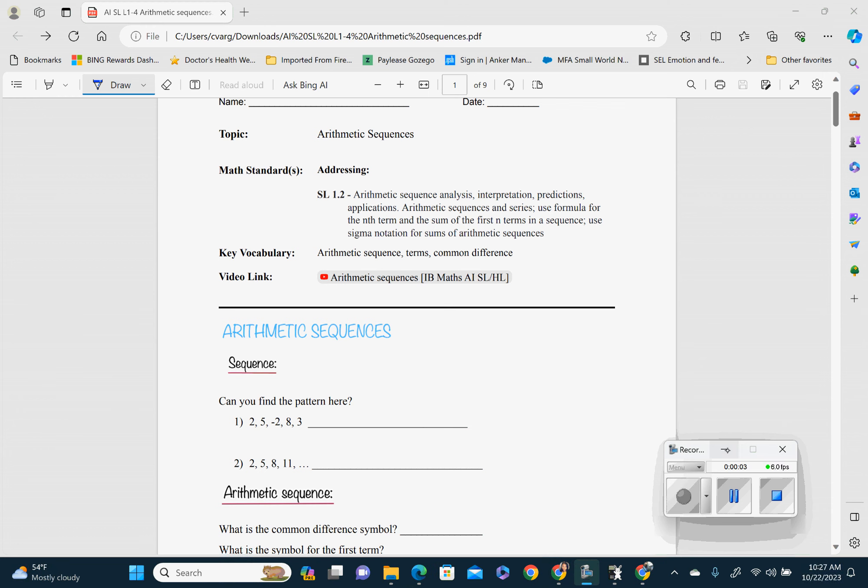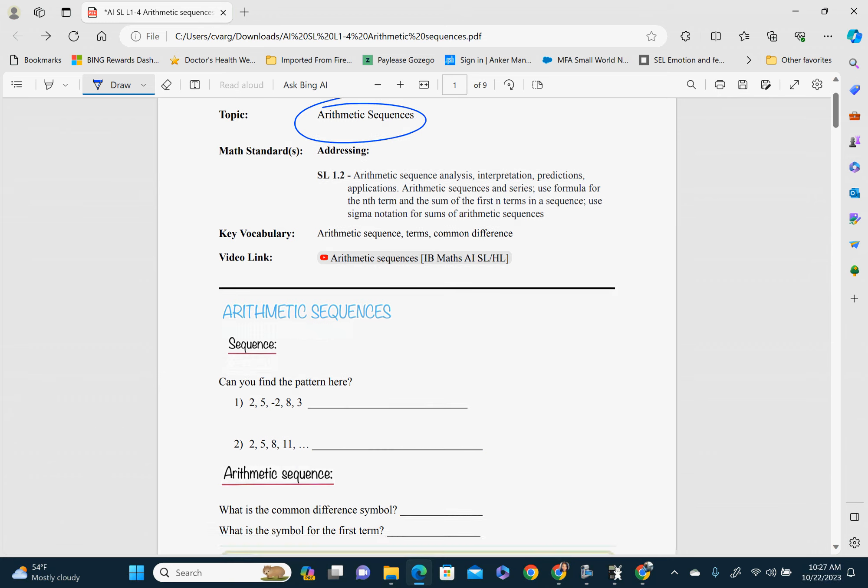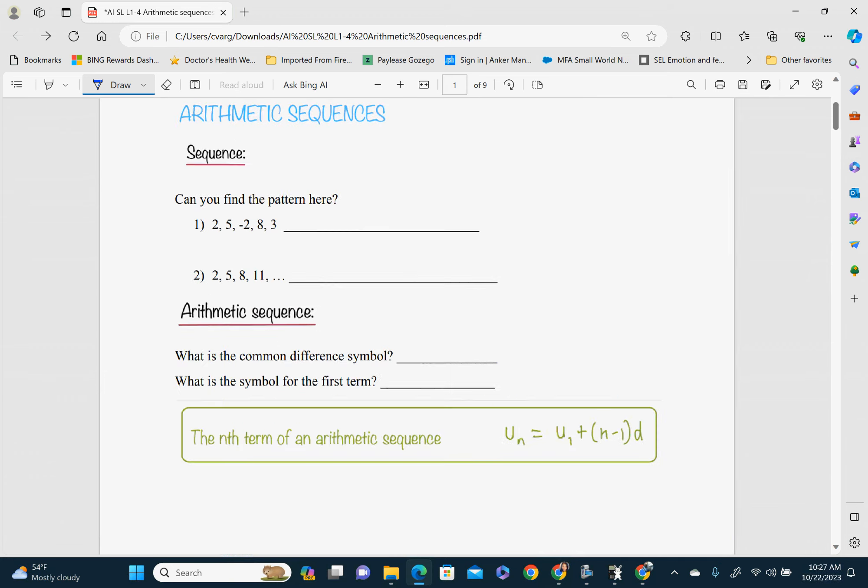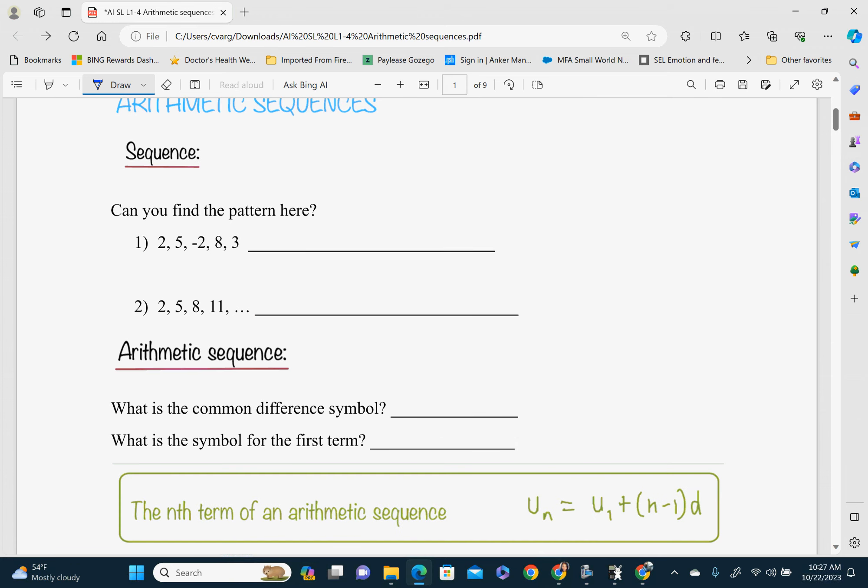All right, so this is the fourth lesson for AISL. It's Arithmetic Sequences. You would have done this in Algebra 1, just to let you know, but let's just review it for sake of memory and, you know, things have happened.